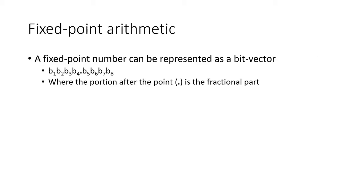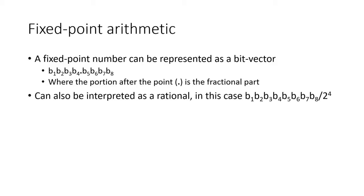In programs, fixed point numbers are represented using a bit vector with an implicit point. Here we have an 8-bit bit vector with a point indicating the four fractional bits. Unlike floating point arithmetic, the point does not move, meaning the fractional part is fixed. We can interpret this as a rational number where the numerator is the bit vector shifted left up to the point as an integer and the denominator is the number of bits shifted to the power of 2.